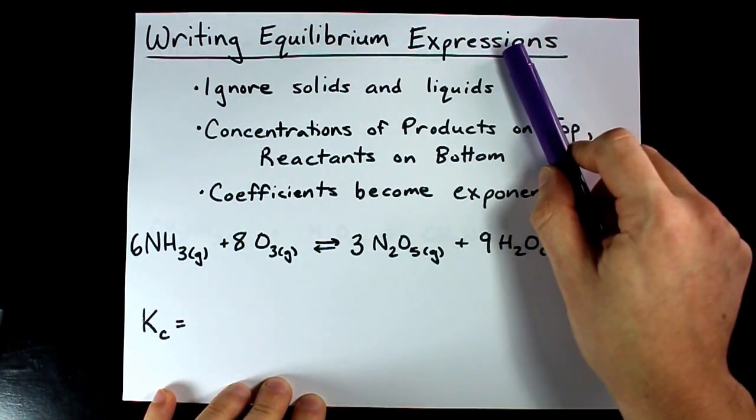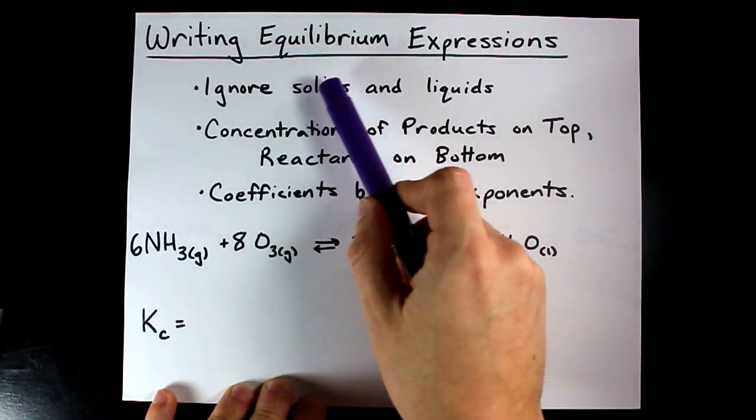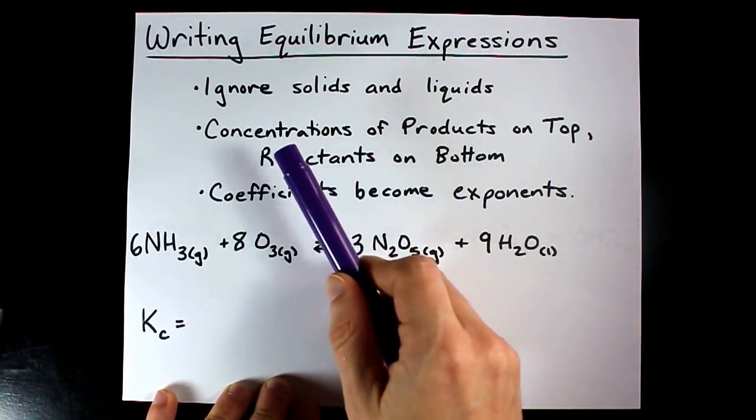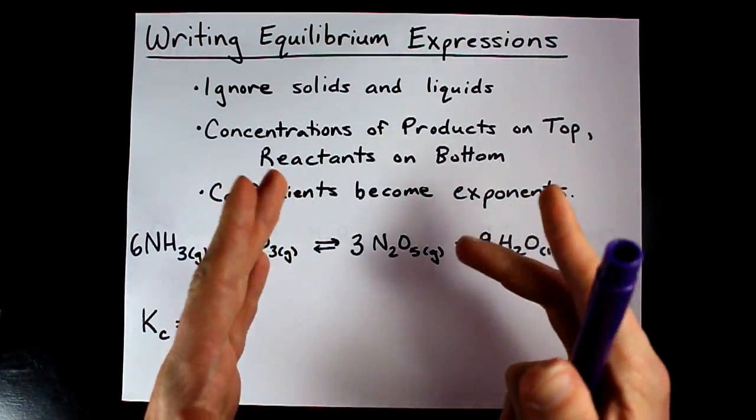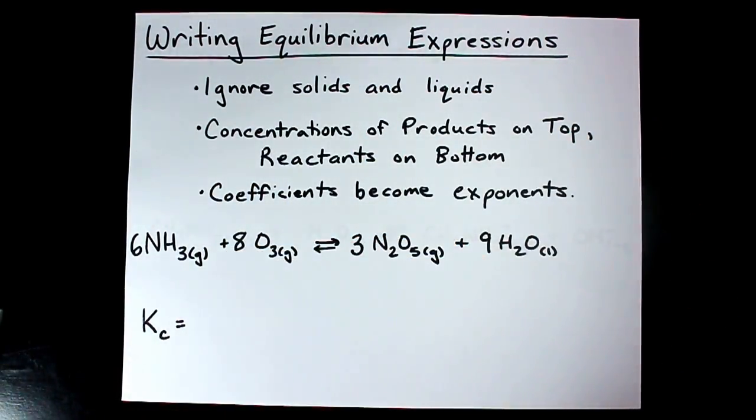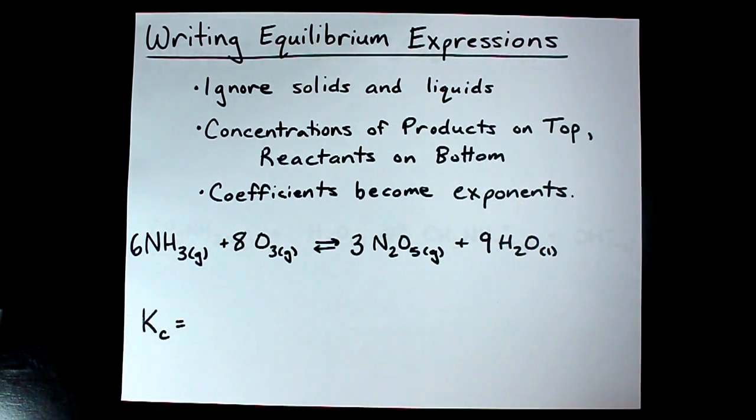To write an equilibrium expression from a balanced chemical equation, you're going to ignore all of the solids and liquids, put the concentrations of the products on top and reactants on bottom. Most teachers will say products over reactants, and the coefficients in the balanced chemical equation will become the exponents in that equilibrium expression.